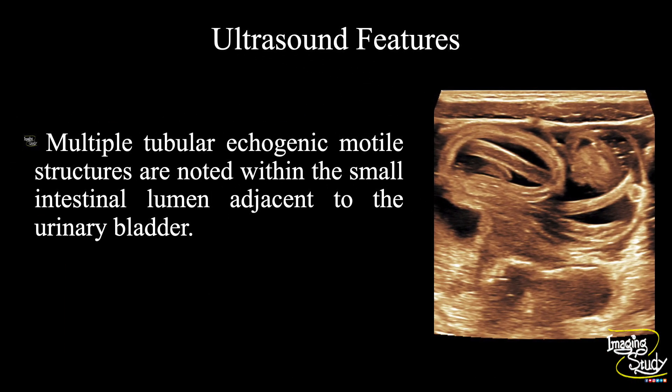In summary, multiple tubular echogenic motile structures are noted within the small intestinal lumen adjacent to the urinary bladder, suggesting this as a case of intestinal ascaris.